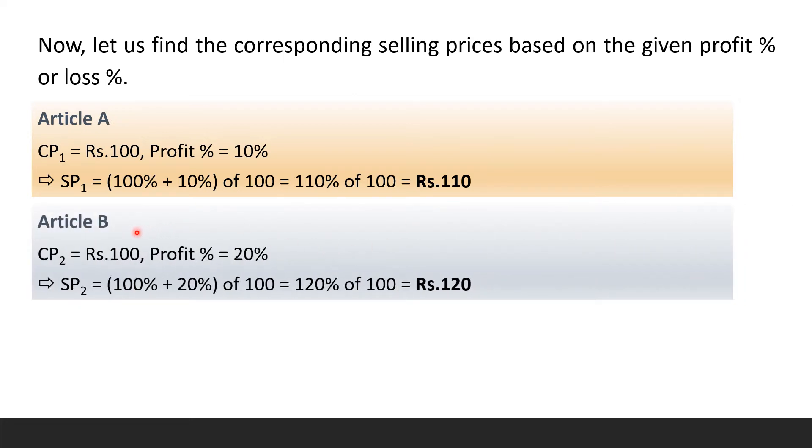Now let us consider Article B. It has a cost price of Rs 100 and a profit of 20%. Therefore, selling price of Article B, SP2, equals 120% of Rs 100, which equals Rs 120.